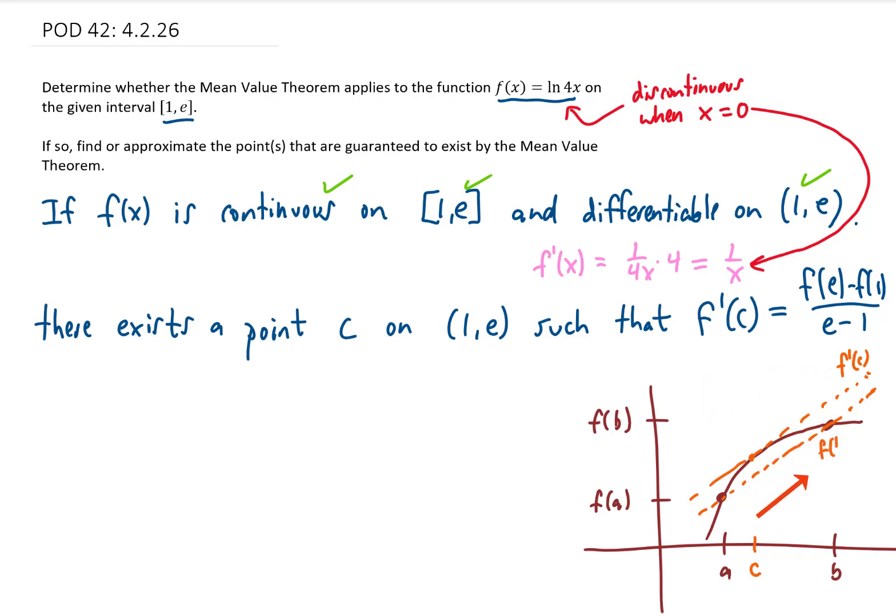And the slope of a secant line between two points looks just like that. So that's your thirty-second mean value theorem lecture. Let's try to finish up our problem.